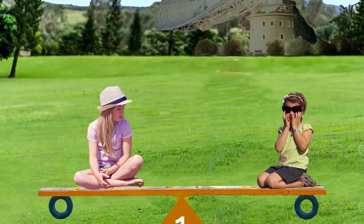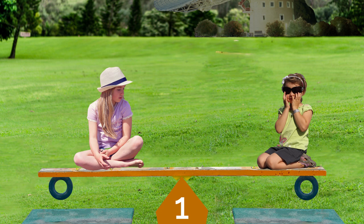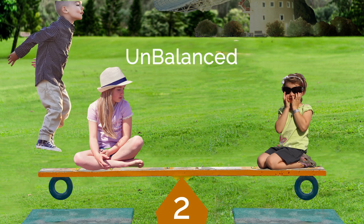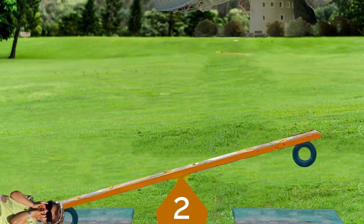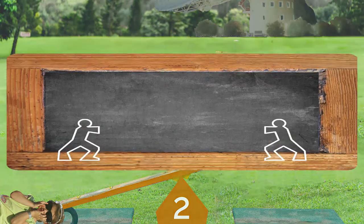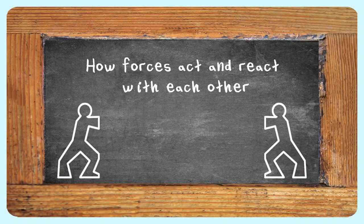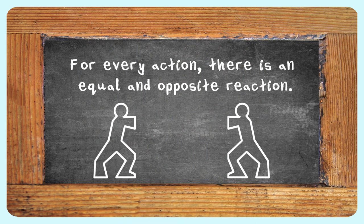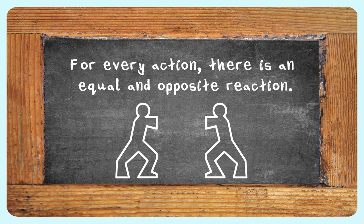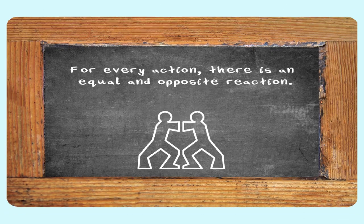His first law predicts how objects behave when forces are balanced. His second law tells us how objects behave when the forces aren't balanced. His third law explains how forces act and react with each other. Specifically, it states: for every action, there is an equal and opposite reaction.